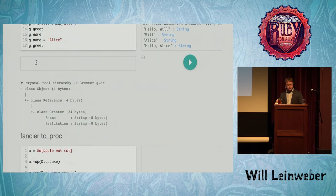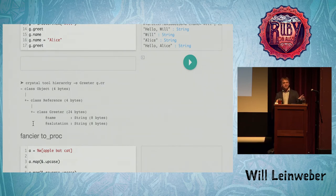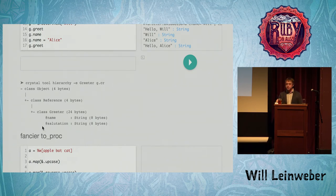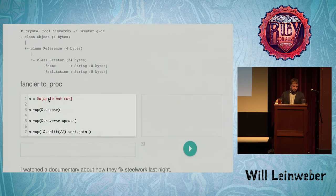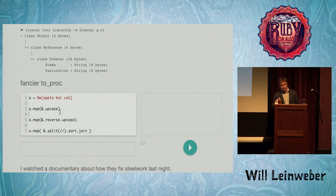What's really cool — since we have a proper class to show off — is that you can use tools that are part of the language to get information about the class. We can see that the Greeter has two properties, a name and a salutation, both strings. You can see how much space this will take up in memory, and you can see the little hierarchy of classes.